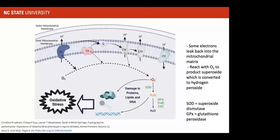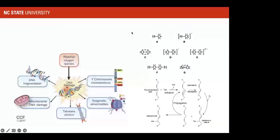When electrons leak back, they can react with oxygen to produce a superoxide, which can be converted to hydrogen peroxide. Both of these can cause significant damage to proteins and lipids, ultimately causing oxidative stress. There are also additional reactive oxygen species produced through lipid peroxidation, where hydrogens and oxygens create lipid peroxides. These reactive oxygen species can cause damage to cells and ultimately to DNA, leading to various disease processes.